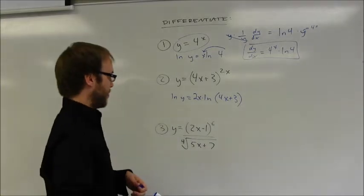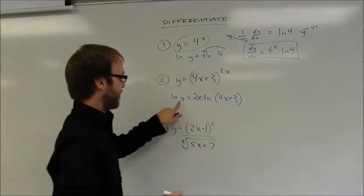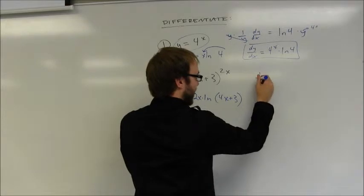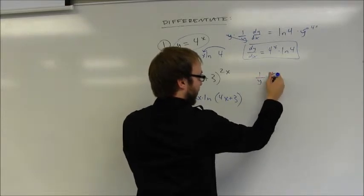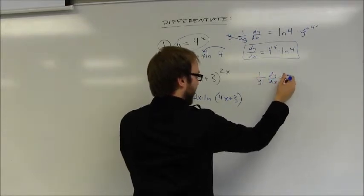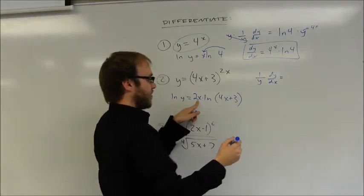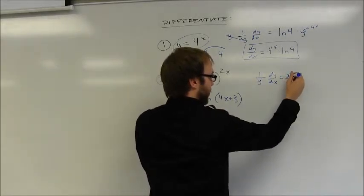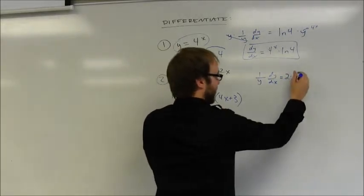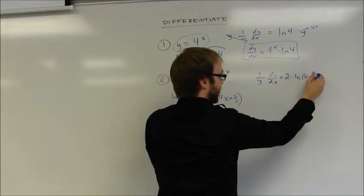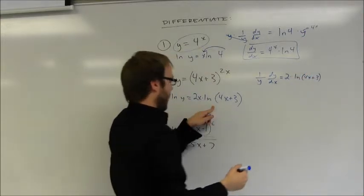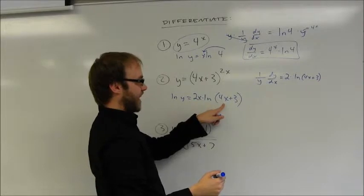The answer is not going to be particularly pretty in this case. So the derivative on this side is going to be 1 over y times the derivative of the inside function dy dx equals the derivative of the first is 2 times the second ln of 4x plus 3 plus the derivative of the second.